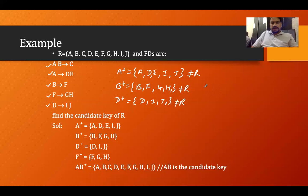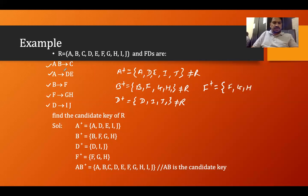Closure of F: F determines G and H. G alone and H alone cannot determine anything further. So closure of F is {F, G, H} — not equal to R. We have now done closures for A, B, D, and F individually.